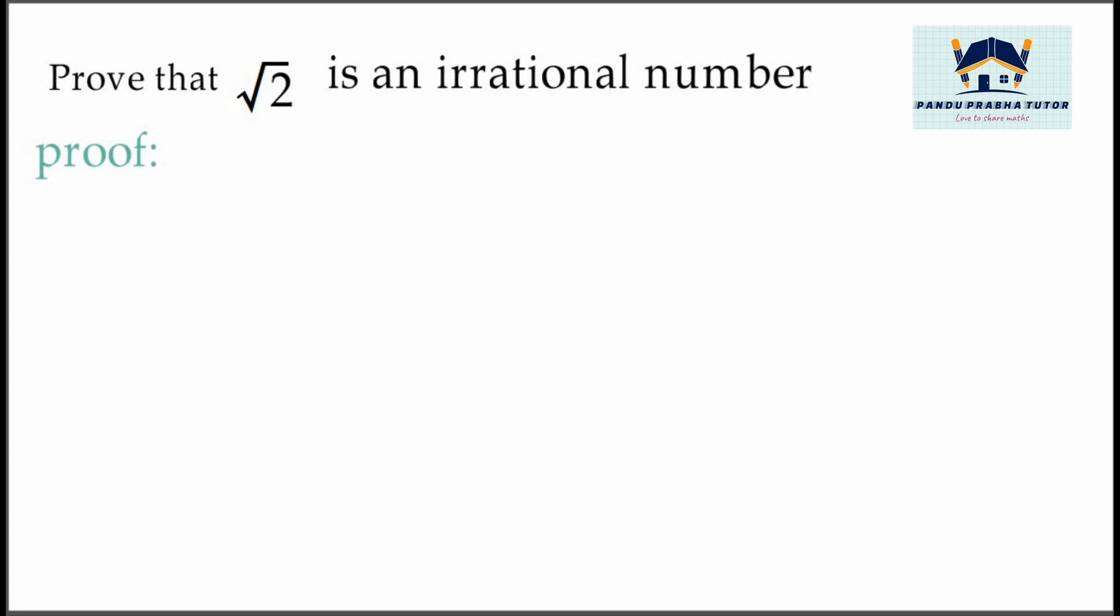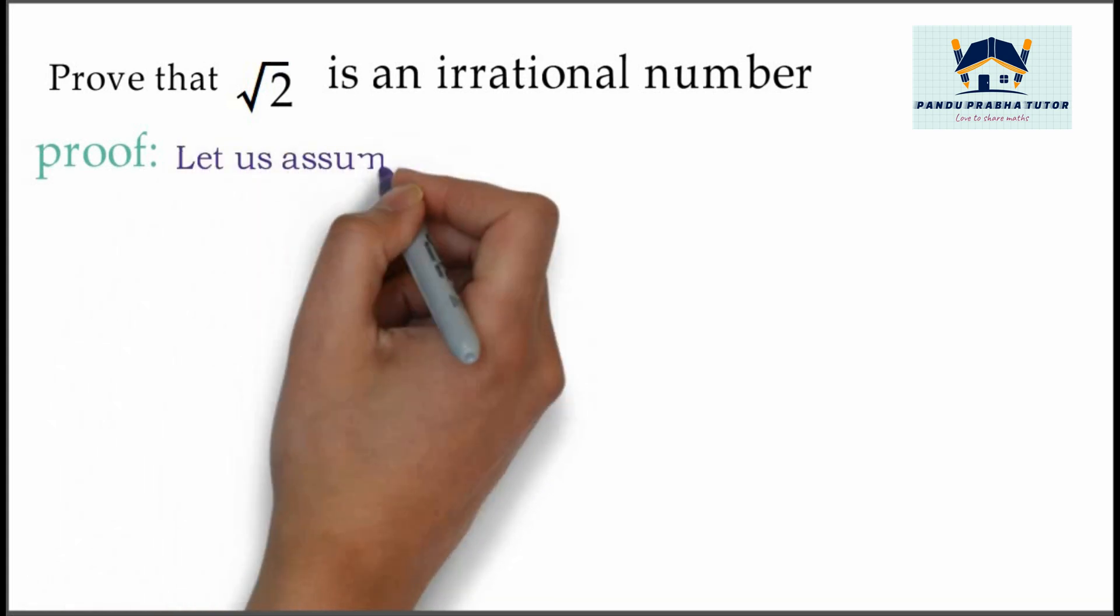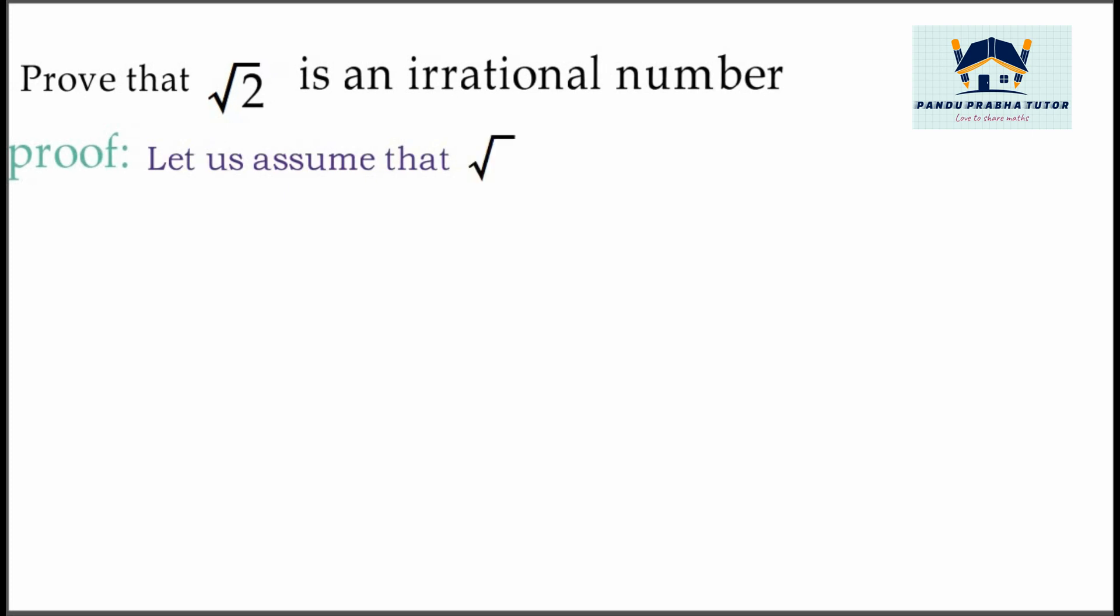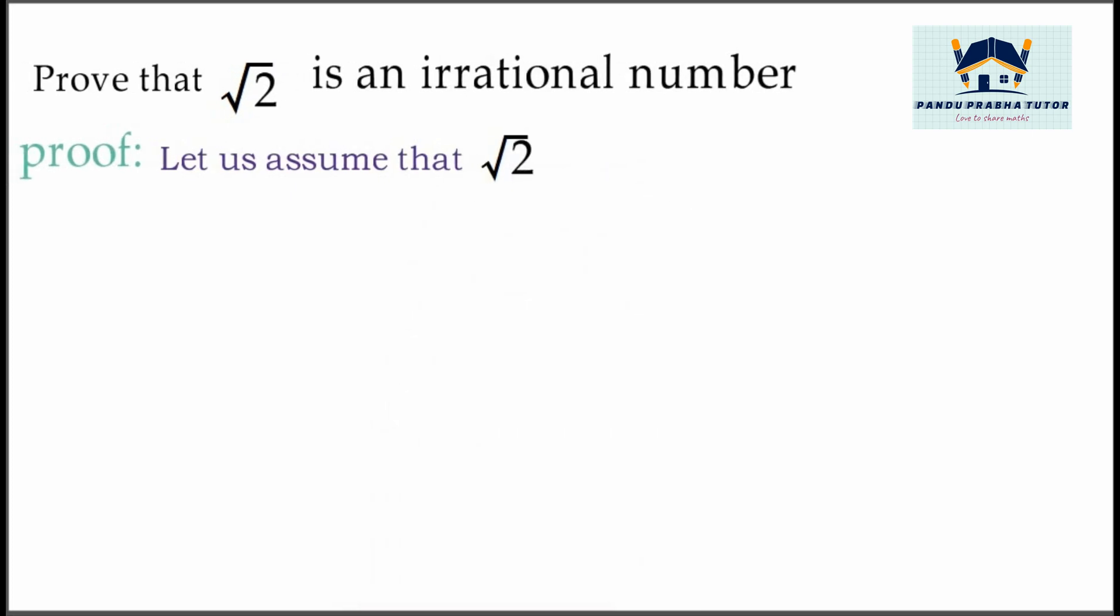We will take this proof using the contradictory method. Let us assume that √2 is a rational number.